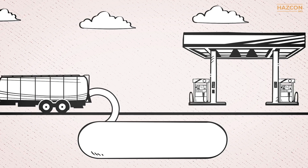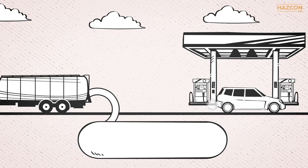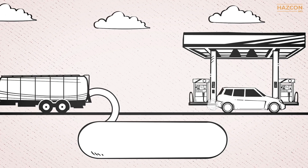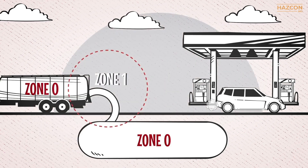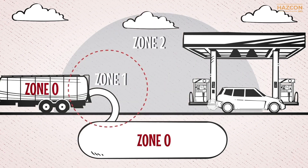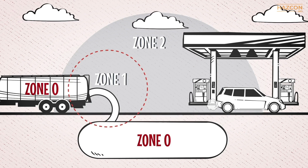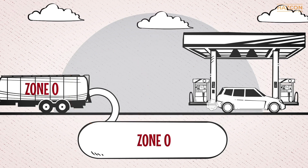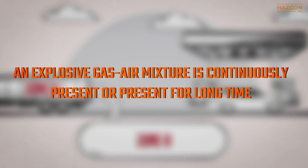To make this easier to understand, look at this diagram of a typical petrol station. The areas classified as Zone 0, Zone 1, and Zone 2 have been identified in this animation. Our focus is on the Zone 0 classified area.